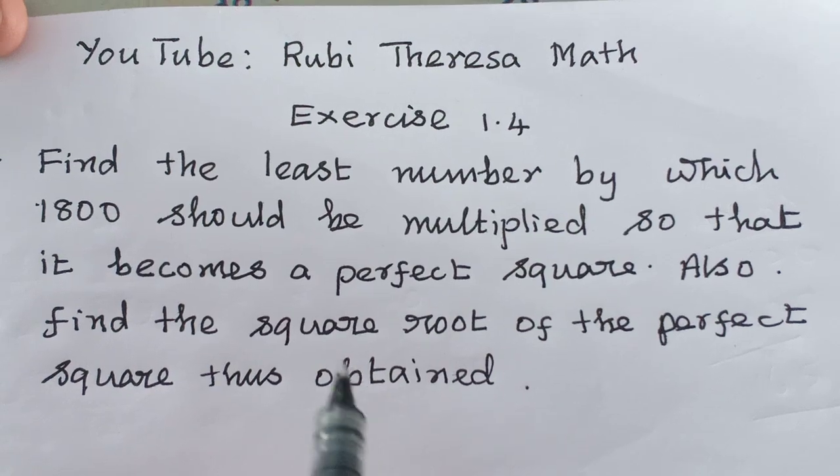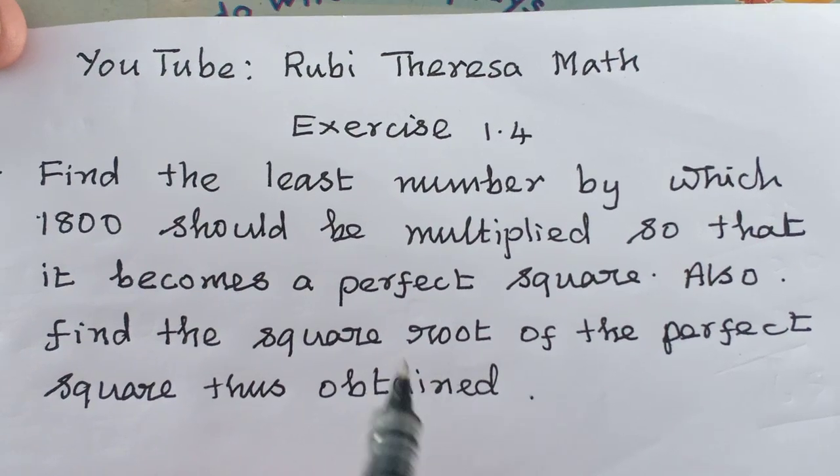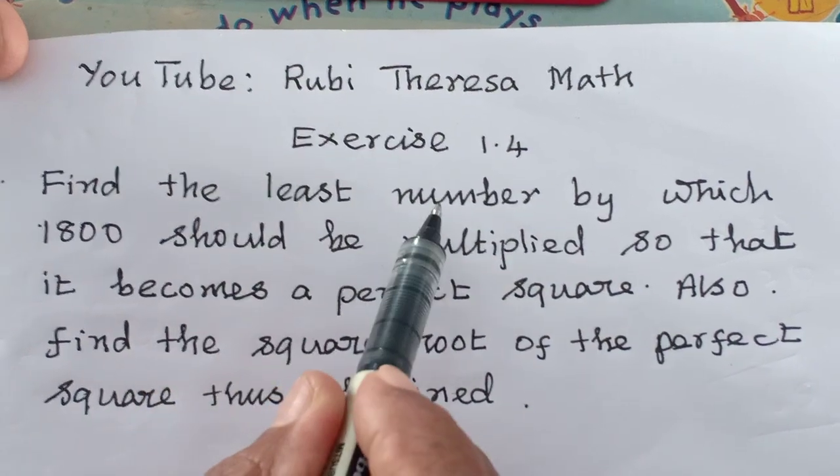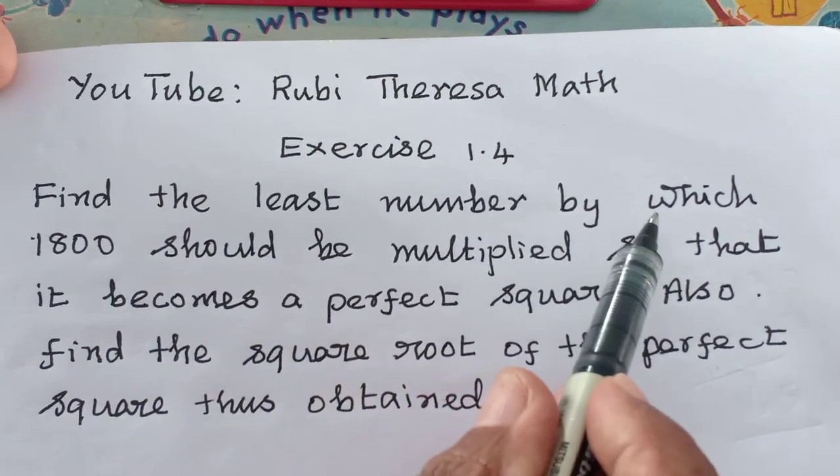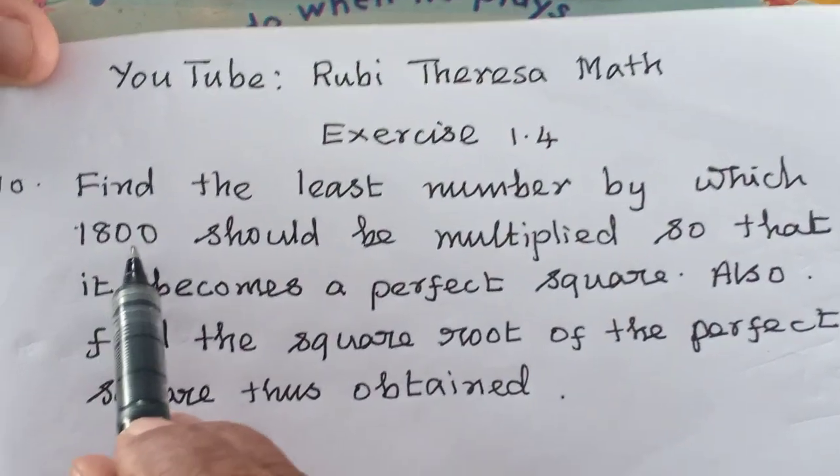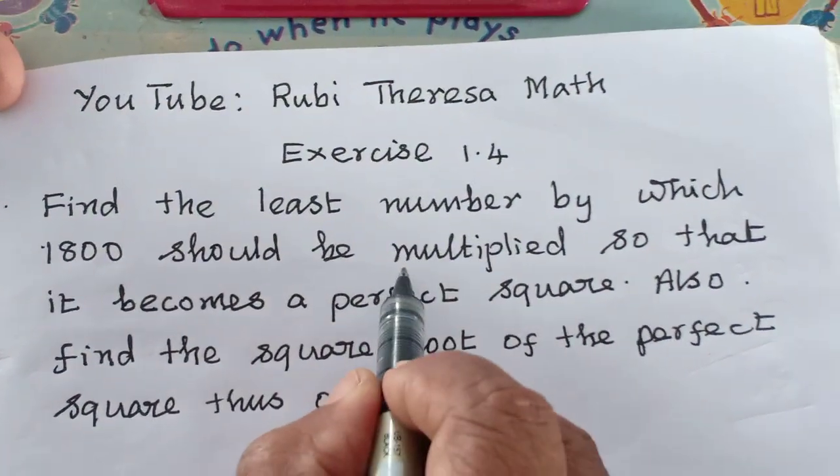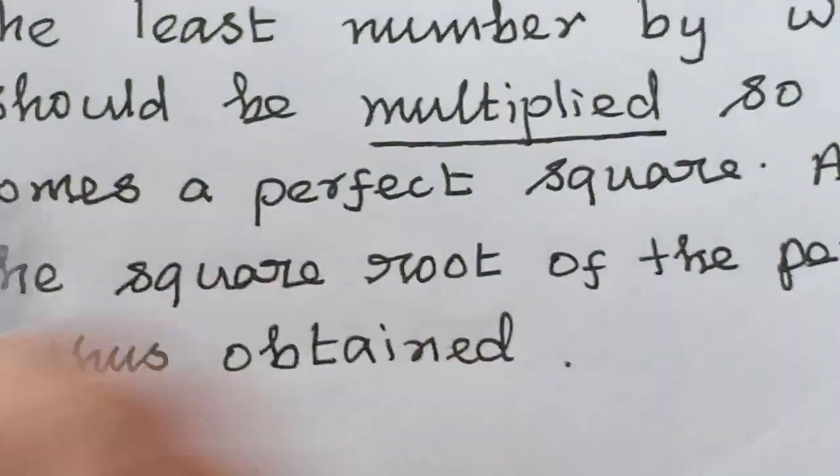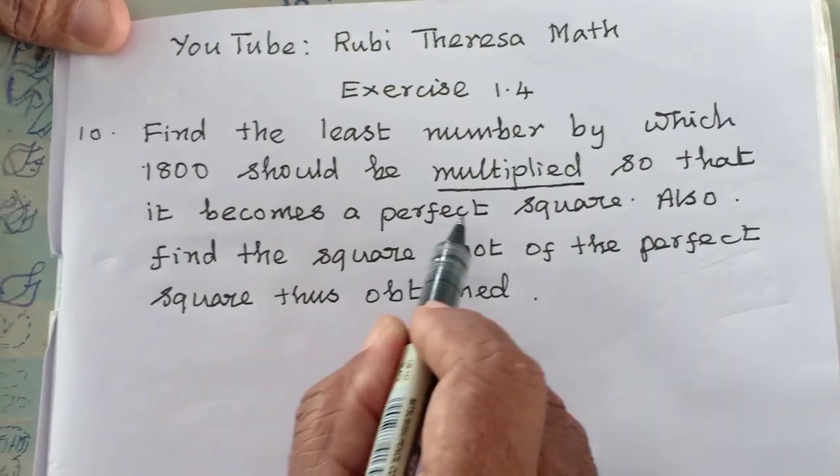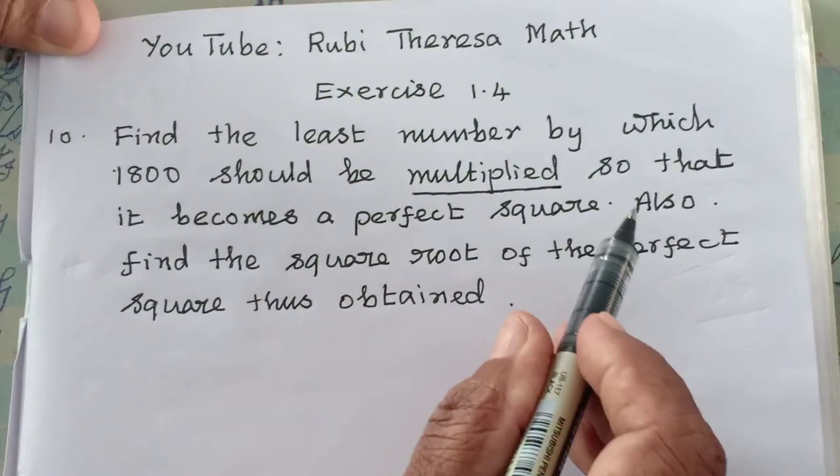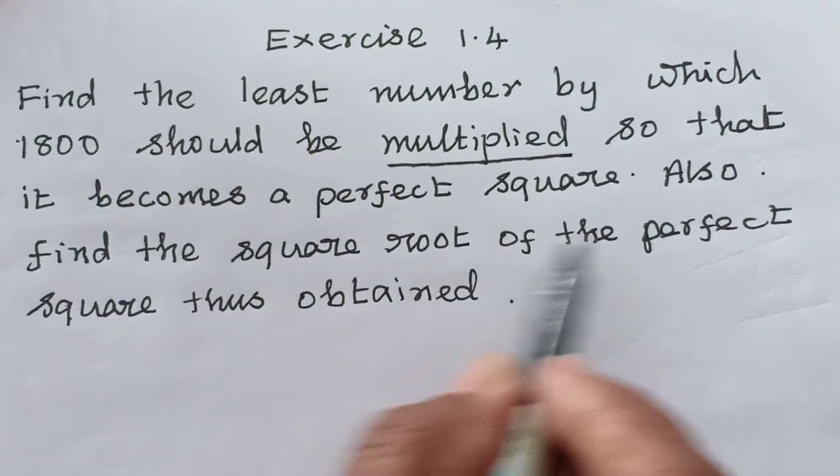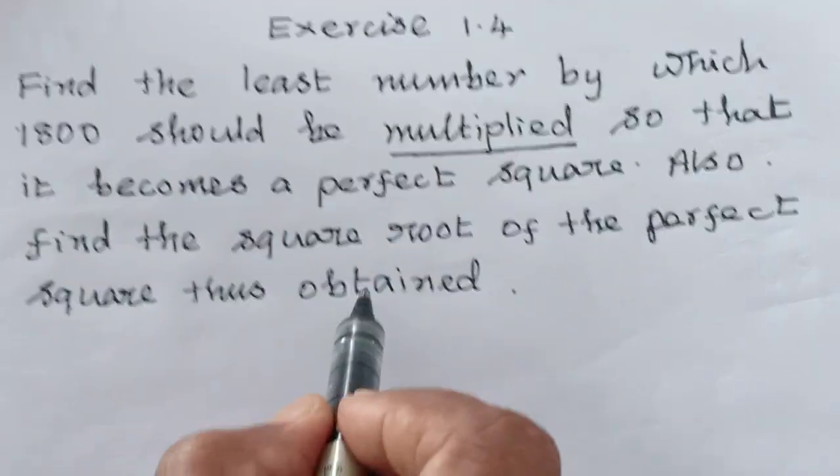You have to improve that habit of reading the problem twice or thrice. Find the least number by which 1800 should be multiplied so that it becomes a perfect square.